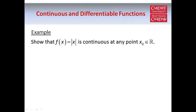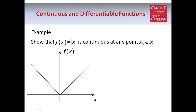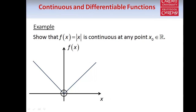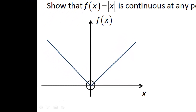Now we're going to look at the classic example of a function which is continuous at a certain point but not differentiable at that point. This is the function f of x equals modulus of x, which has the familiar V shape with a sharp point at x equals zero. We're going to start by proving that it's continuous at all points, and then we're going to show that it's not differentiable at x equals zero. Even though this is a fairly standard example, it's important to understand how to prove these things in a proper way without just looking at the shape of the graph.